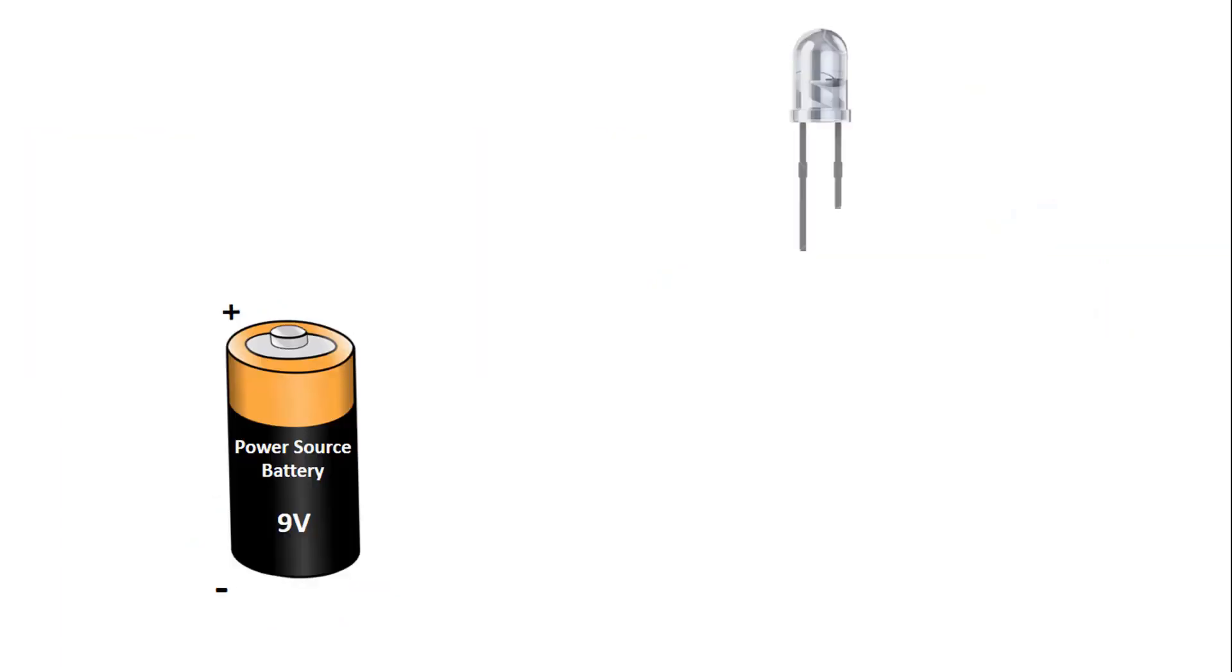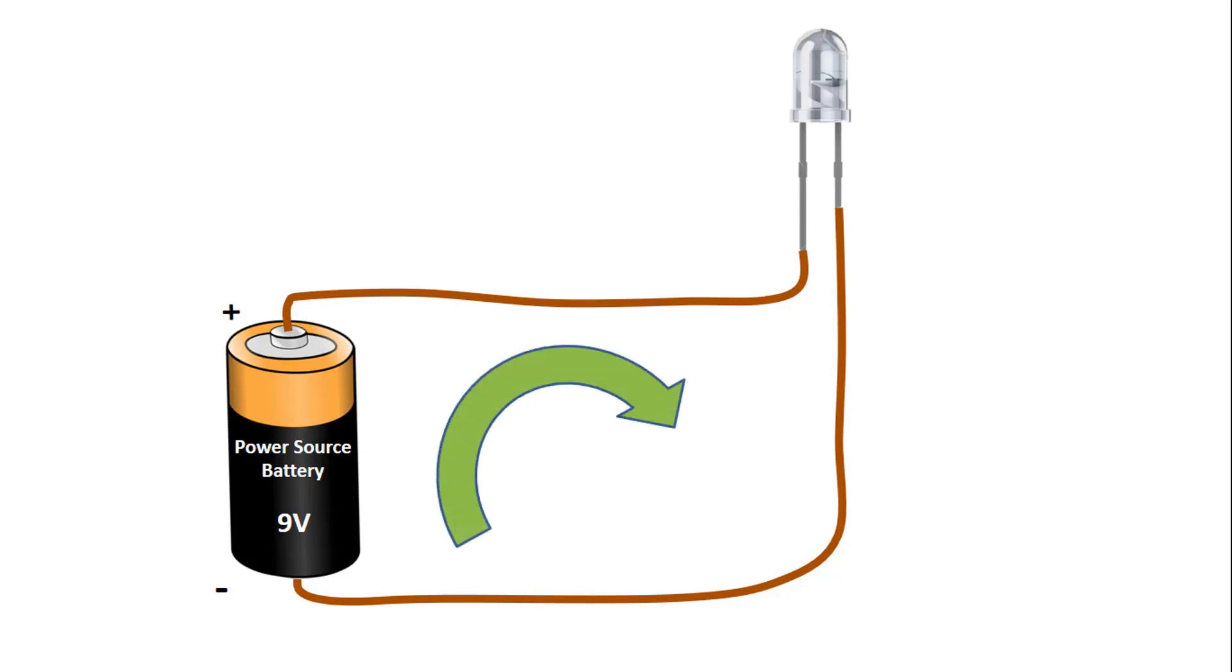So how to use a fixed resistor circuit? Now let's look at it. Let's learn the basic usage through a simple circuit. For example, let's have a 9V voltage source.